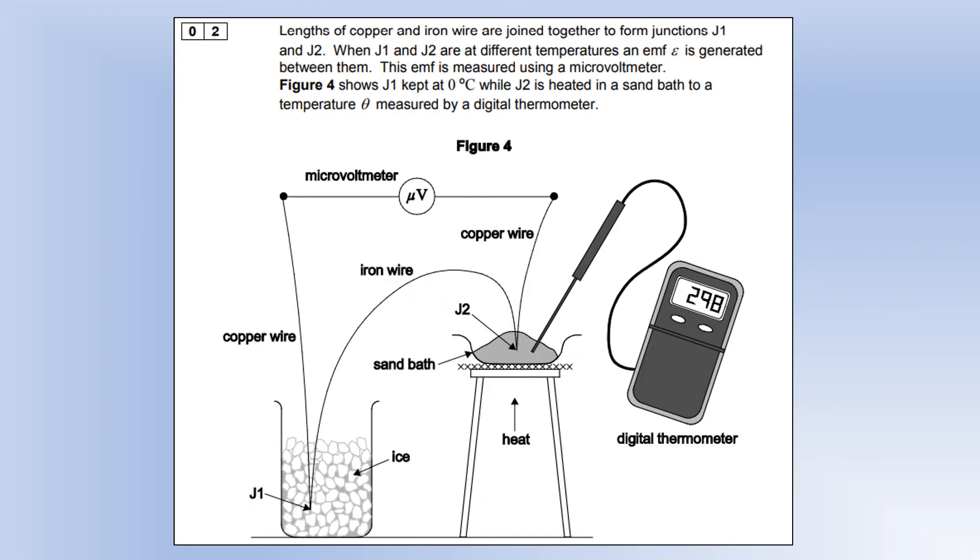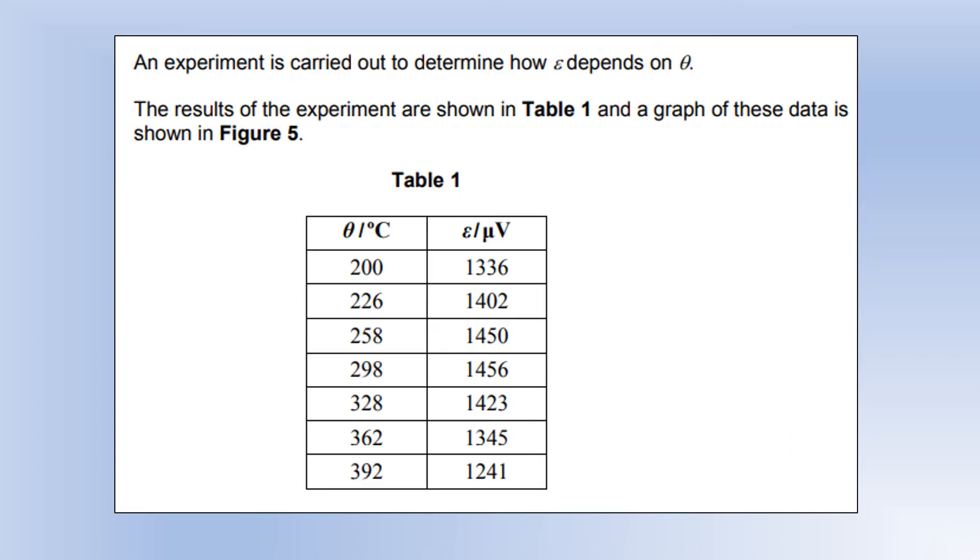Moving on to question two, we've got lengths of copper and iron wire joined to form junctions J1 and J2. When they're at different temperatures, an EMF is generated between them. The EMF is measured using a microvolt meter, presumably because it's very small. J1 is kept at zero degrees while J2 is heated using a sand bath, and the temperature is measured using a digital thermometer. This is the data that is collected - the different temperatures and the different EMFs.